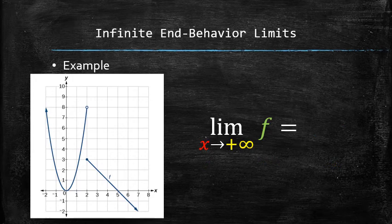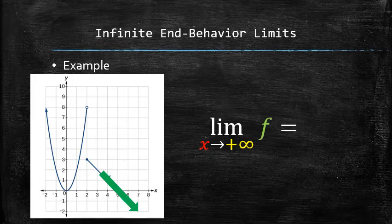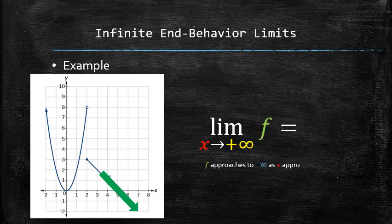Similarly, to find the non-asymptotic end-behavior limit on the right, we need to determine whether the graph increases or decreases indefinitely as x approaches positive infinity. It is easy to see that the function goes down — f approaches negative infinity as x approaches positive infinity. Therefore, the answer is negative infinity.